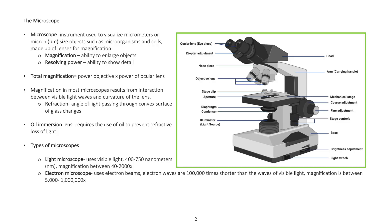The microscope is an instrument used to visualize micrometers or micron-sized objects, such as microorganisms and cells. It is made up of lenses for magnification. Magnification is the ability to enlarge objects. Resolving power is the ability to show detail.